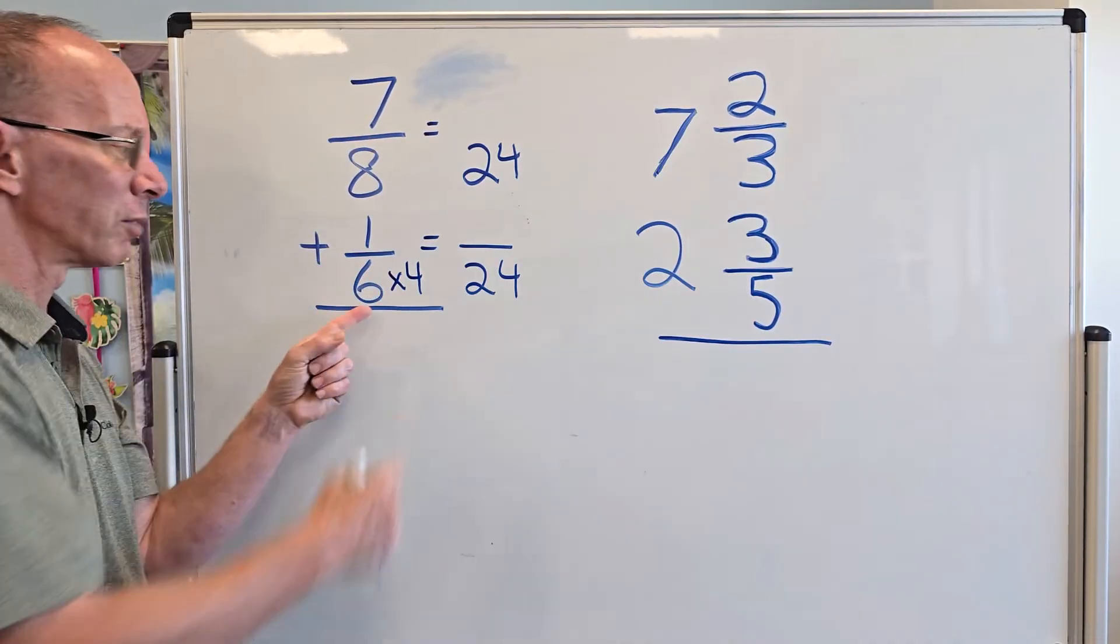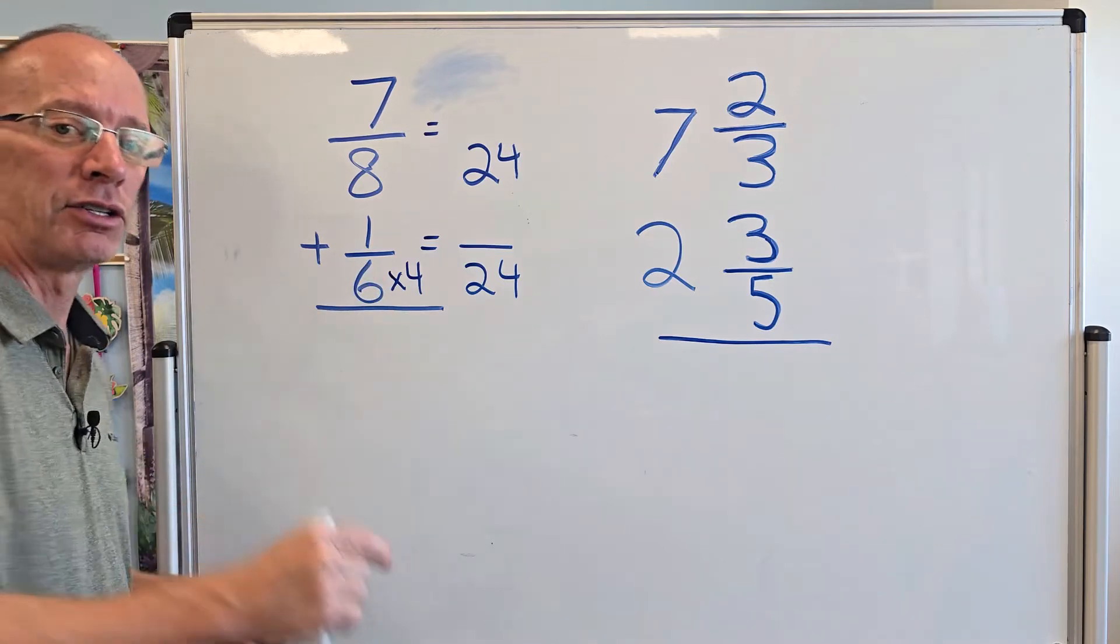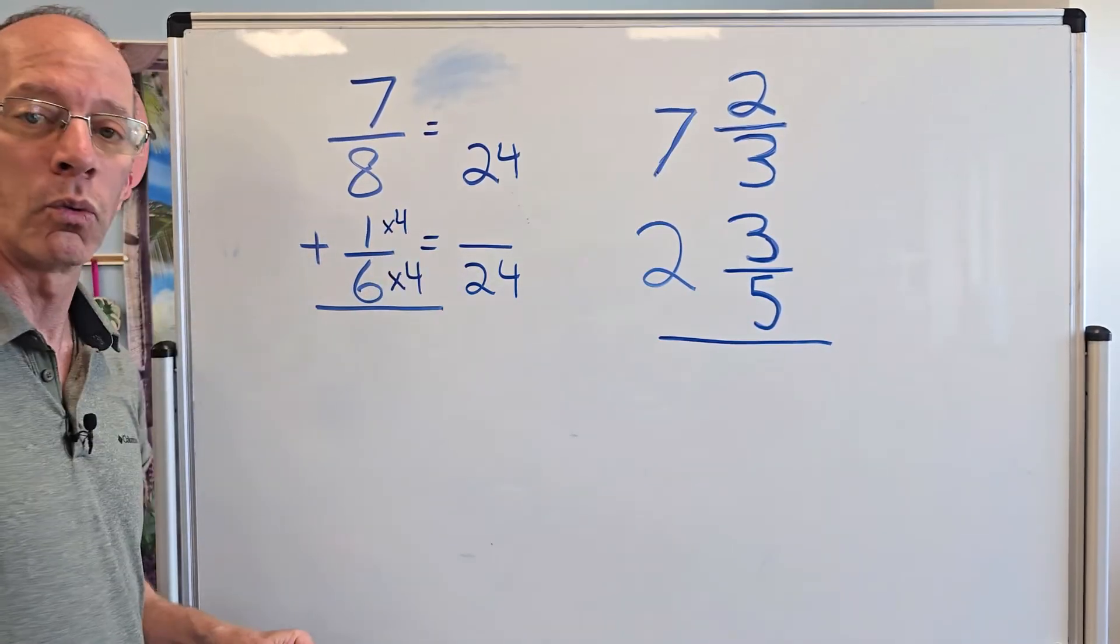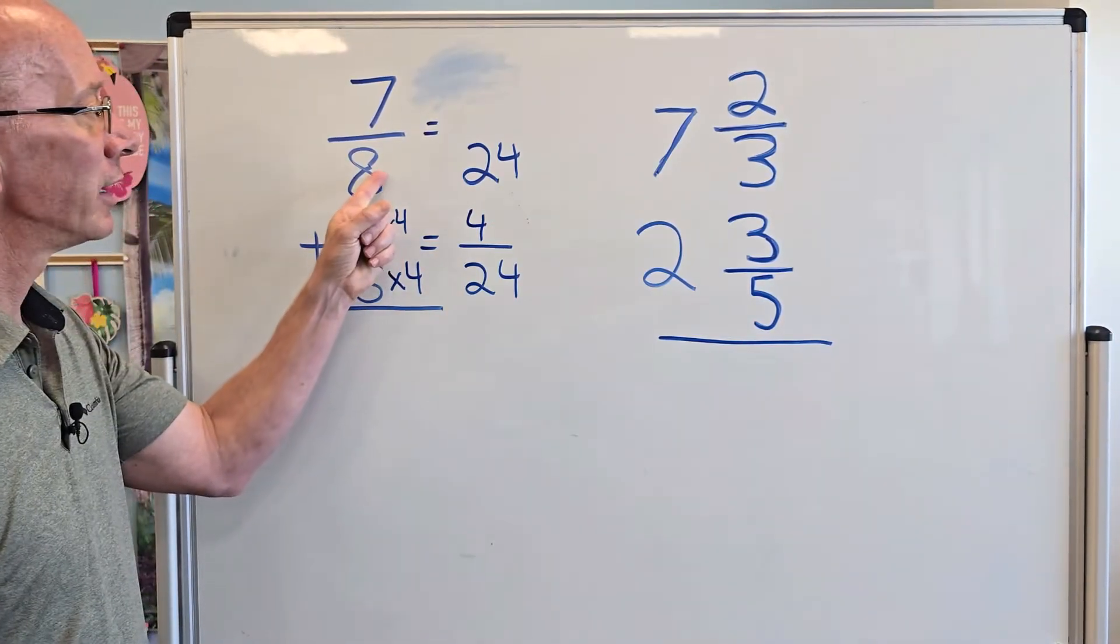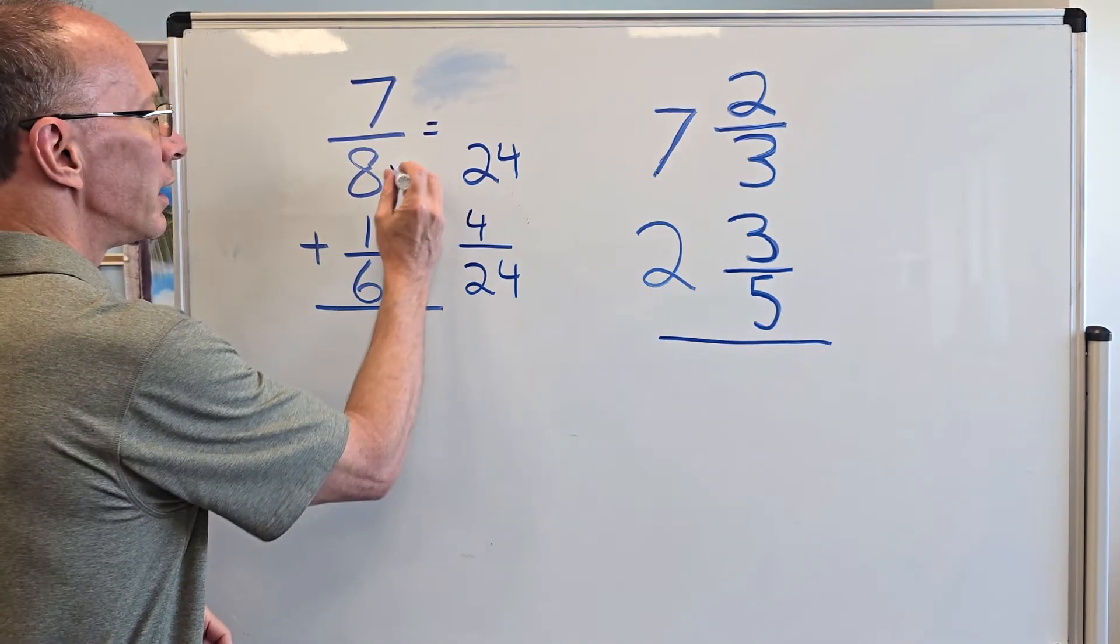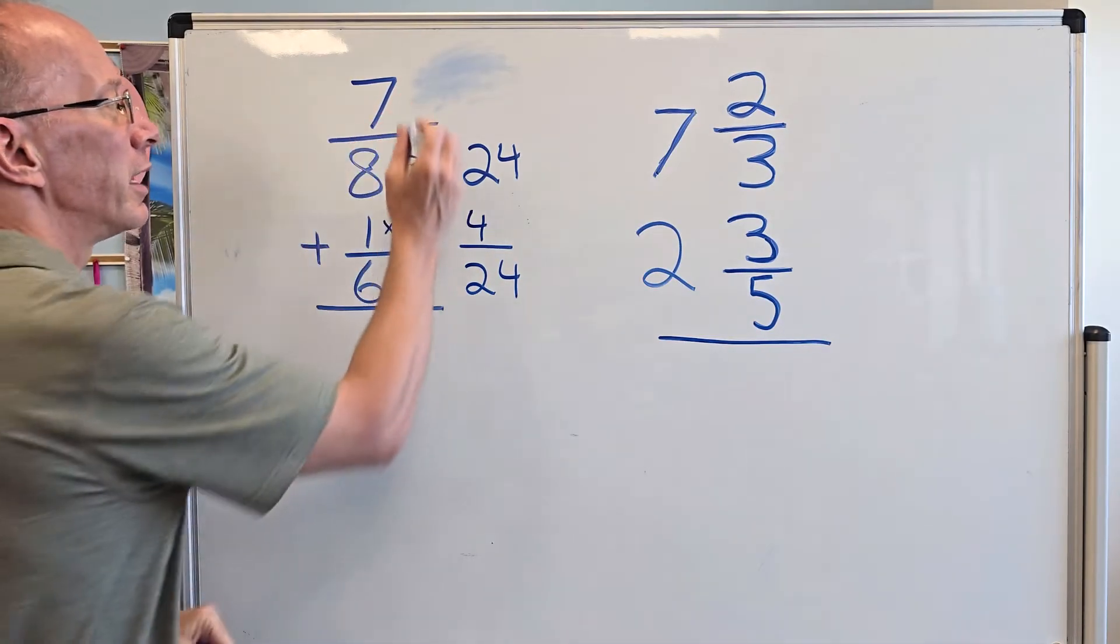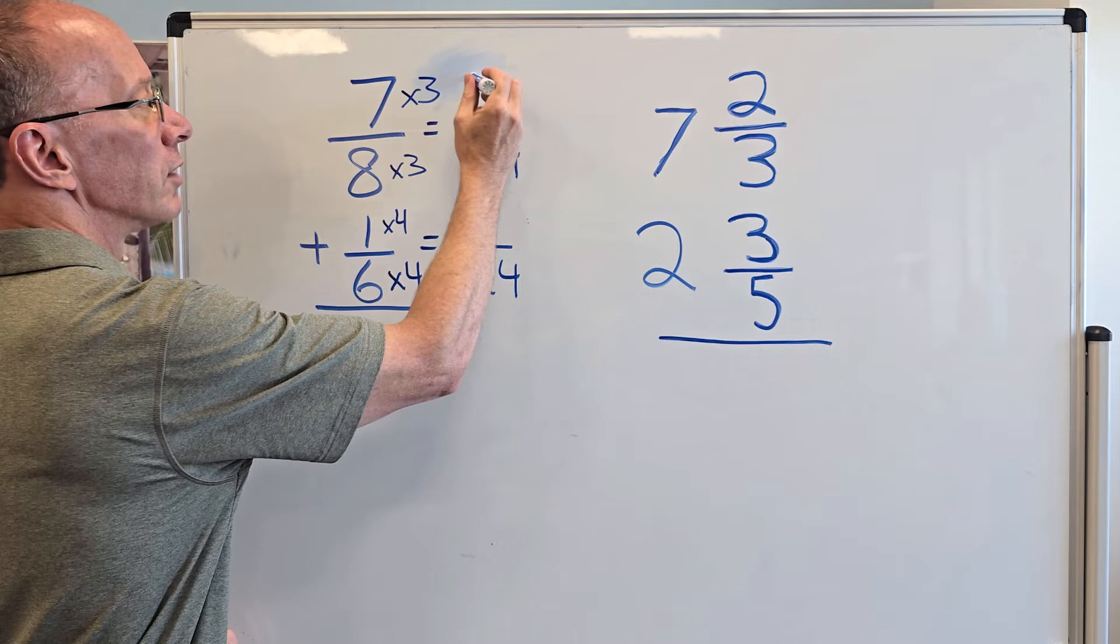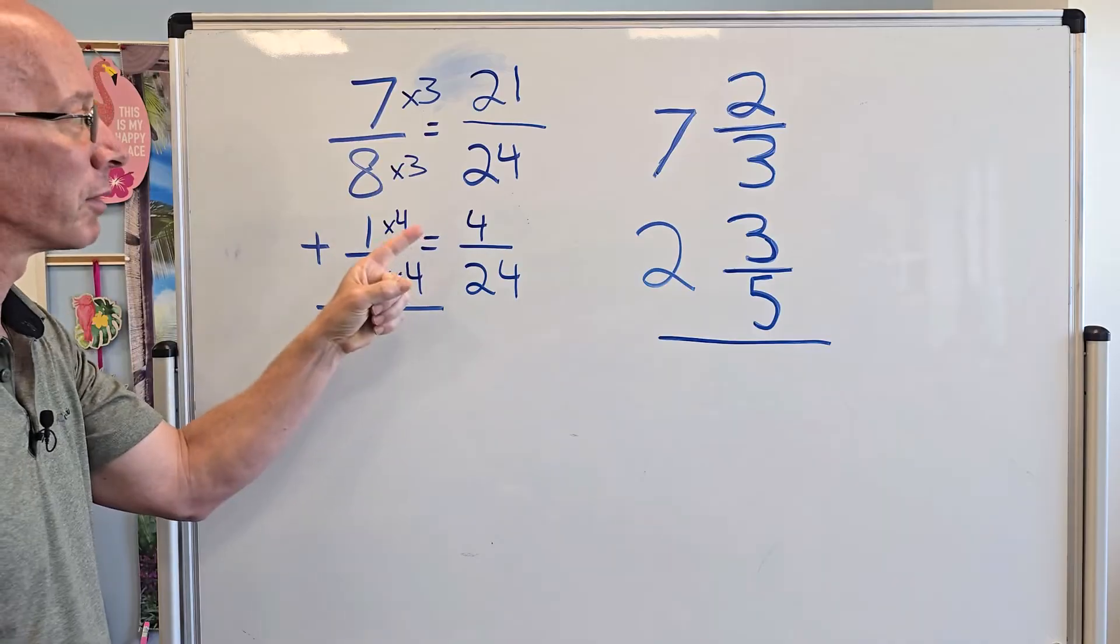6 times 2 is 12. 6 times 3 is 18. 6 times 4, 24. So I need to take 6 times 4 here. And I could have started with this one. But 6 times 4 equals 24. Whatever I do with the denominator, I have to do the same thing with the numerator. So I need to put times 4 right there. So 1 times 4 would equal 4. Now I'm going to do this one right here. 8 times what equals 24? 8 times 3 equals 24. So I need to put times 3 up here. So times 3 right here. And 7 times 3 equals 21.